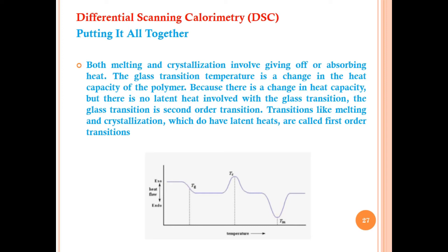First-order transitions are those in which the system either absorbs or releases a fixed amount of energy per volume. In the combined DSC curve, temperature is along the x-axis and heat flow along the y-axis, showing Tg, Tc, and Tm. Tg and Tm are endothermic (minima), while Tc is an exothermic process (maxima).